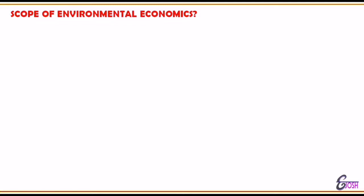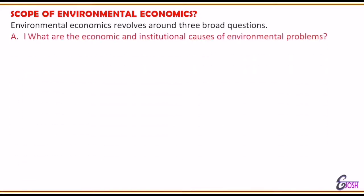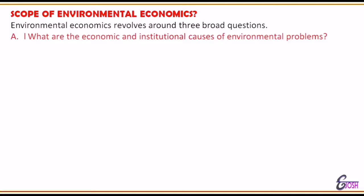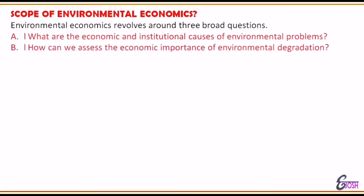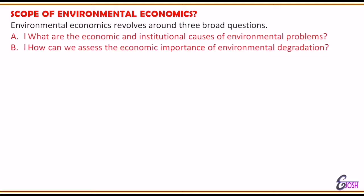Now, what is the scope of environmental economics? The scope may be discussed through three questions. First: what are the economic and institutional causes of environmental problems — like air pollution, water pollution, noise pollution, soil degradation, and global warming — and why are these problems taking place? Second: how can we assess the economic importance of environmental degradation and what is the impact of environmental degradation from an economic point of view?